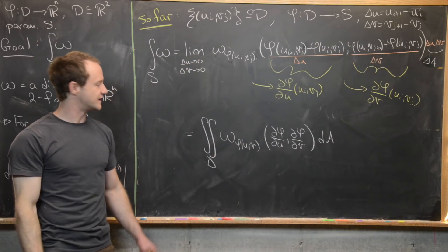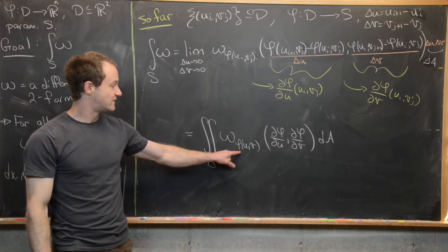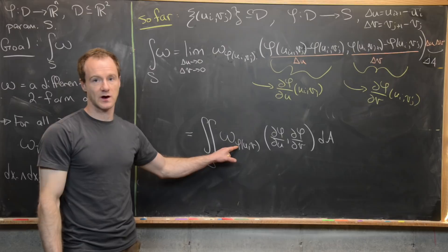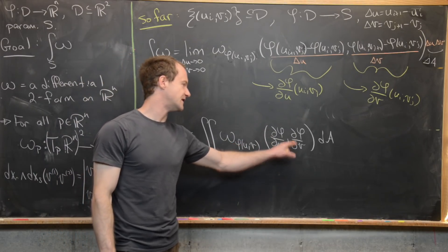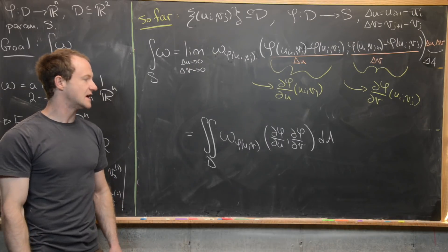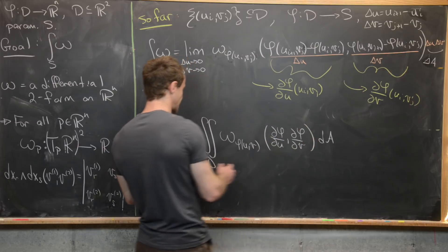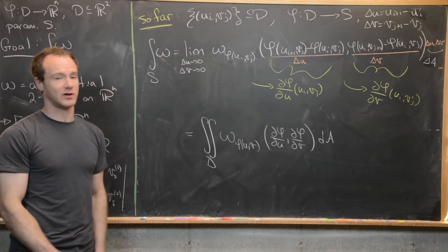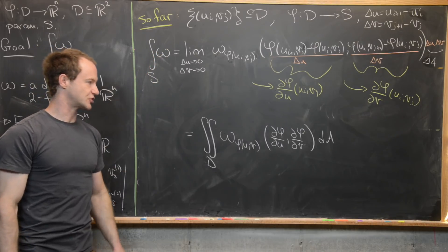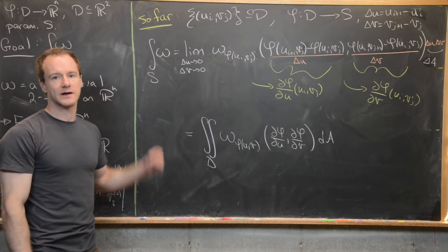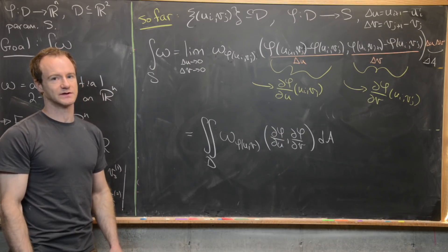This equals the double integral over D of omega evaluated at phi(u, v), further evaluated at ∂phi/∂u and ∂phi/∂v, times dA. We first evaluate omega at phi(u, v), then at the two vector fields ∂phi/∂u and ∂phi/∂v, giving a function we can integrate as a plain double integral to find the integral of this differential two-form. We'll come back in the next video and do several examples.